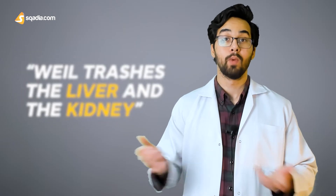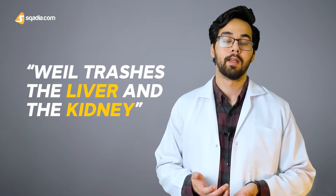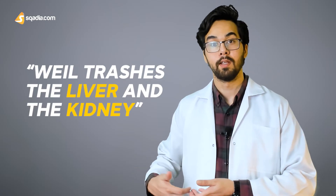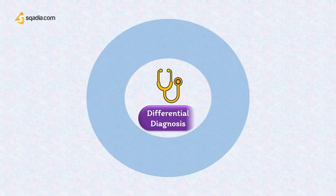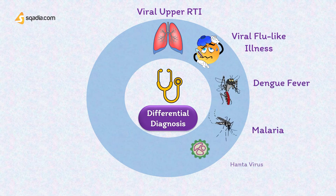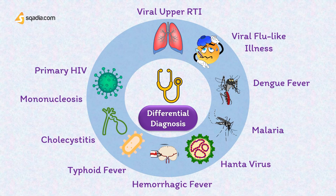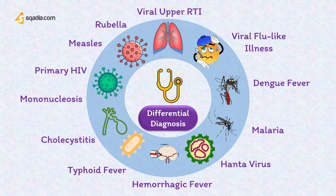This illness is usually severe and may last weeks or months if the patient survives. An easy mnemonic: Weil's disease crashes the liver and the kidney, so the manifestations you will see will be from liver failure and kidney failure. The differential diagnosis for leptospirosis is extremely large, ranging from benign processes like viral upper respiratory tract infections and flu-like illnesses, to severe infections including dengue fever, malaria, hantavirus, hemorrhagic fevers, and typhoid fever. Also consider cholecystitis, infectious mononucleosis, primary HIV, measles, or rubella.